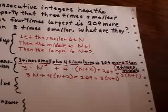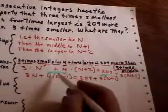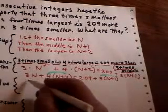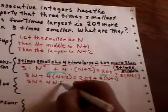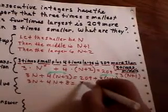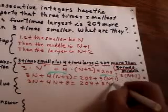Now we solve. The first step in solving is getting rid of the brackets. So I'm going to multiply through those brackets. That will leave me with three n plus four n plus eight is 209 plus three n plus three.